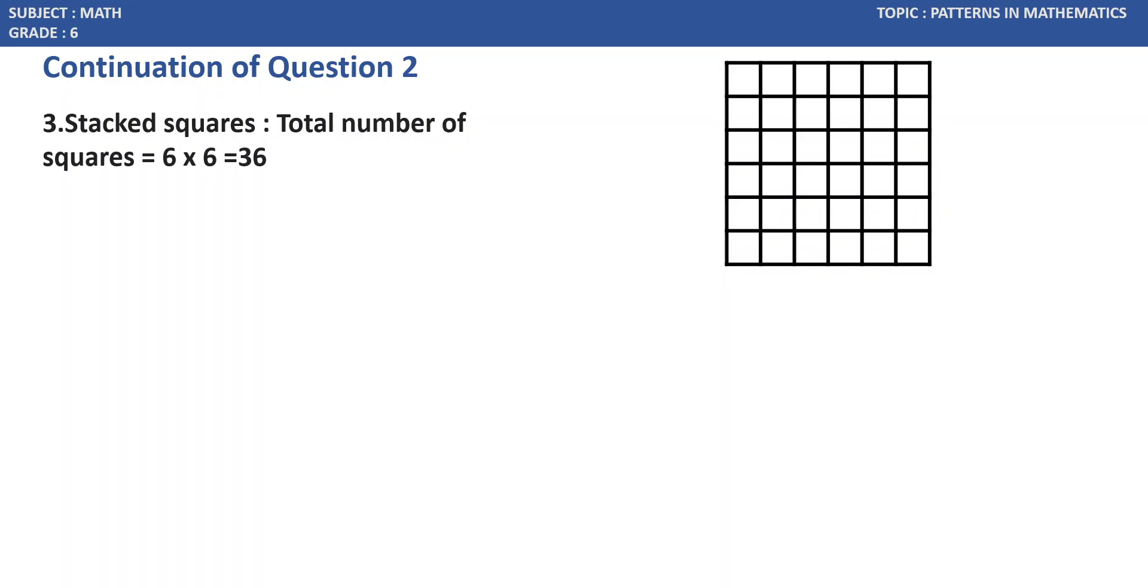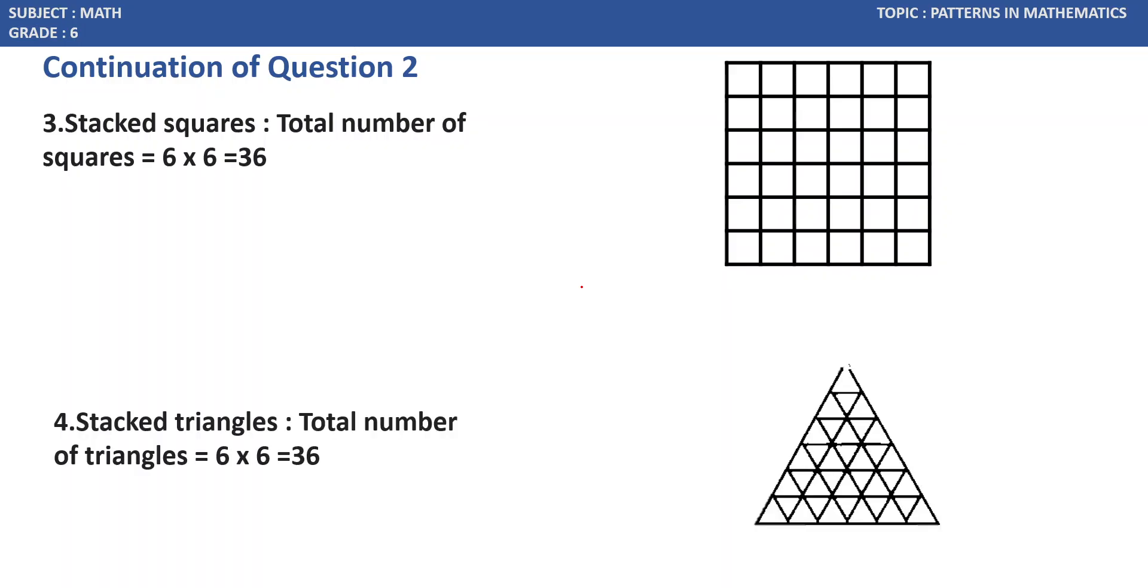The third one is stacked squares. Total number of squares is 6 into 6, 36. Next one is stacked triangles. Total number of triangles is equal to 6 into 6, 36.